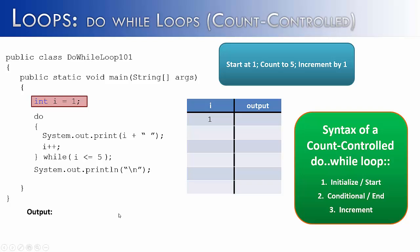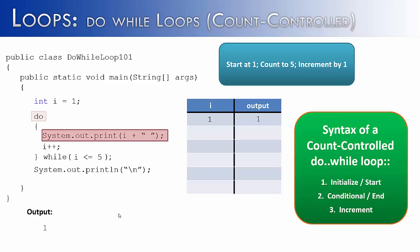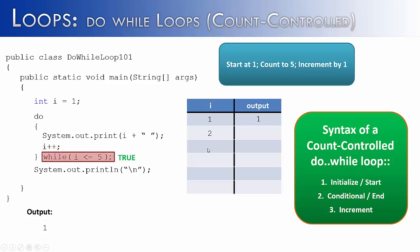As we start our loop, i would equal 1. We get to the do statement, which just tells the computer to go into the loop, and we print out the value of i. The value of i is 1, so we print 1. Then i++ makes i equal 2, as indicated in the t-chart. Then we check the condition: while i is less than or equal to 5.